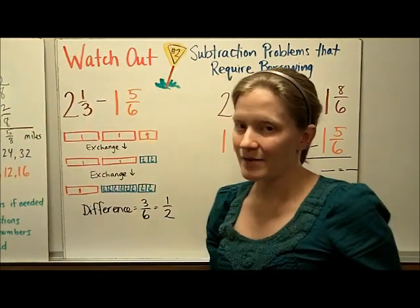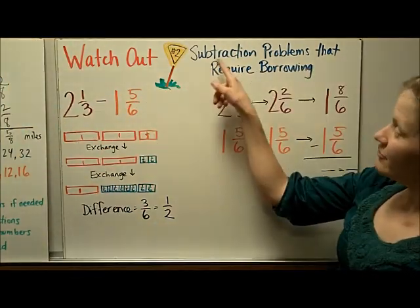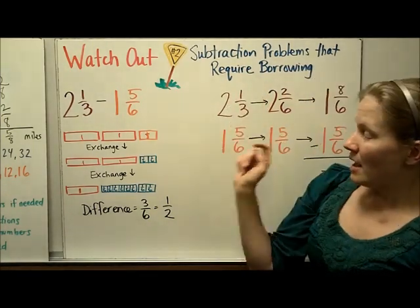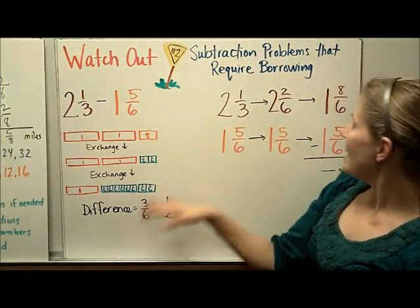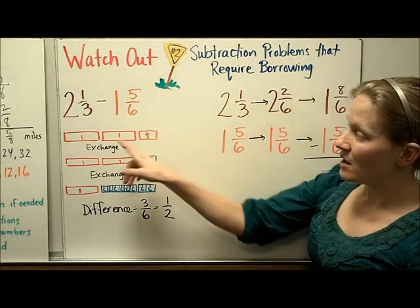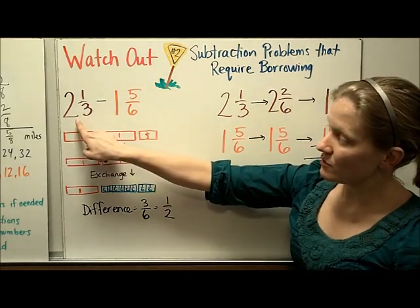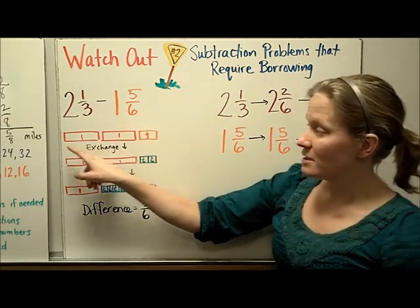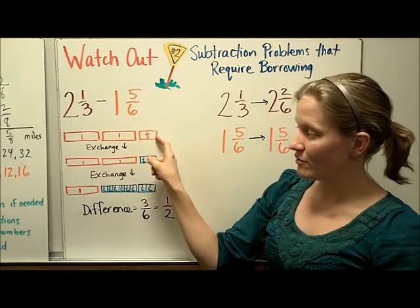The next kind of problem to watch out for is if you have a subtraction problem that requires borrowing. Here's an example, modeled, and then we'll do the steps over here in a second. You can see that we're trying to do 2 and 1/3 minus 1 and 5/6. So I've modeled 2 and 1/3.